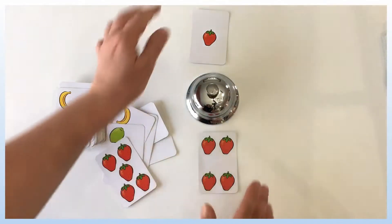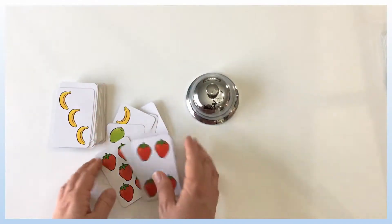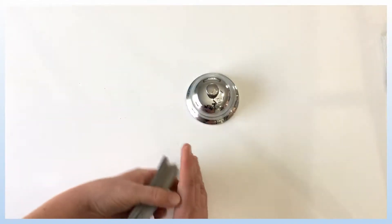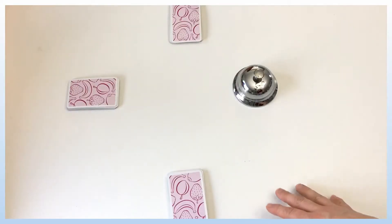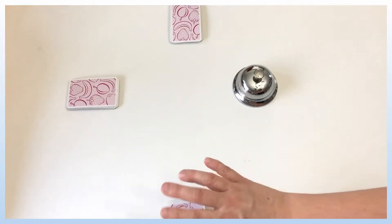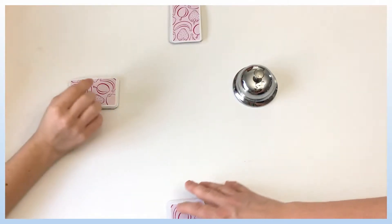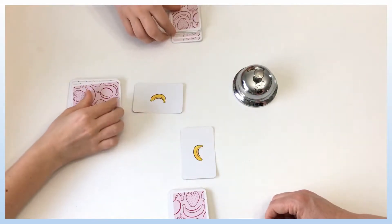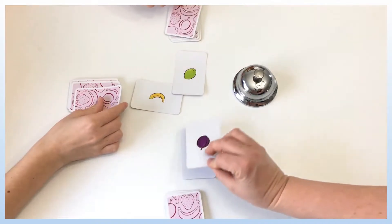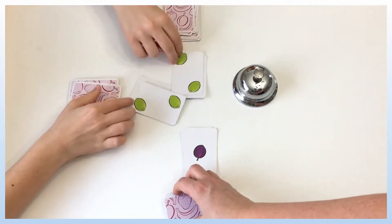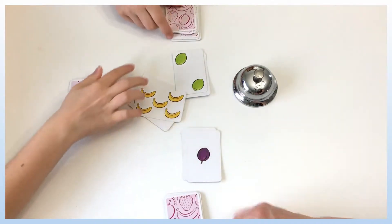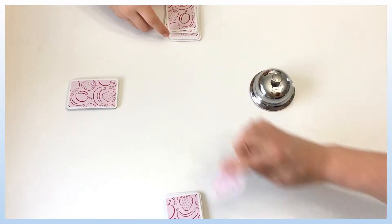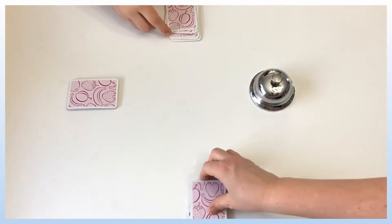The first one to ring the bell will get all the cards. So let's start. We're going to distribute the cards equally between the players and we're going to start playing. One at a time, we're going to turn a card and as soon as we see five cards of the same fruit, we need to ring the bell. And then we're going to stack up on top until we see five. Five banana. So I pick up everything and then I start again.